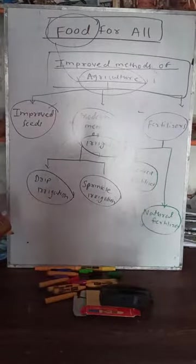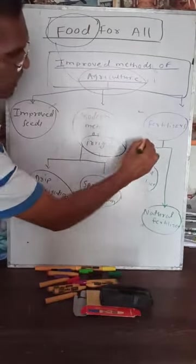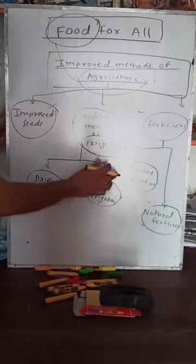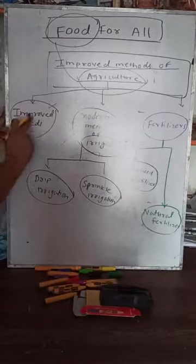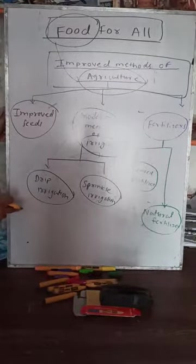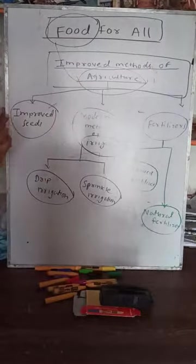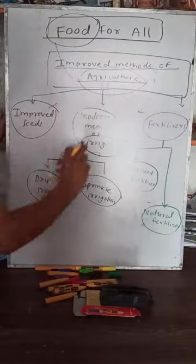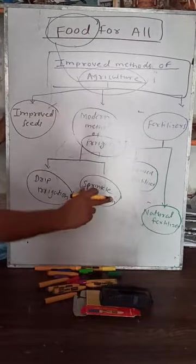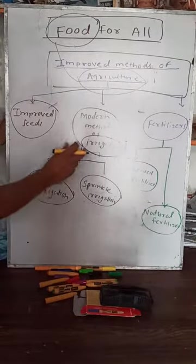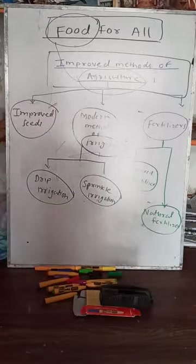Fertilizer plays a very important role — it is a boost for plants, and due to fertilizer, plants grow rapidly. There are two types of fertilizers: chemical fertilizer and natural fertilizer. This flow chart shows all today's topics. When you close your eyes, you should visualize: improved seeds, modern methods of irrigation, and fertilizers with their two types.